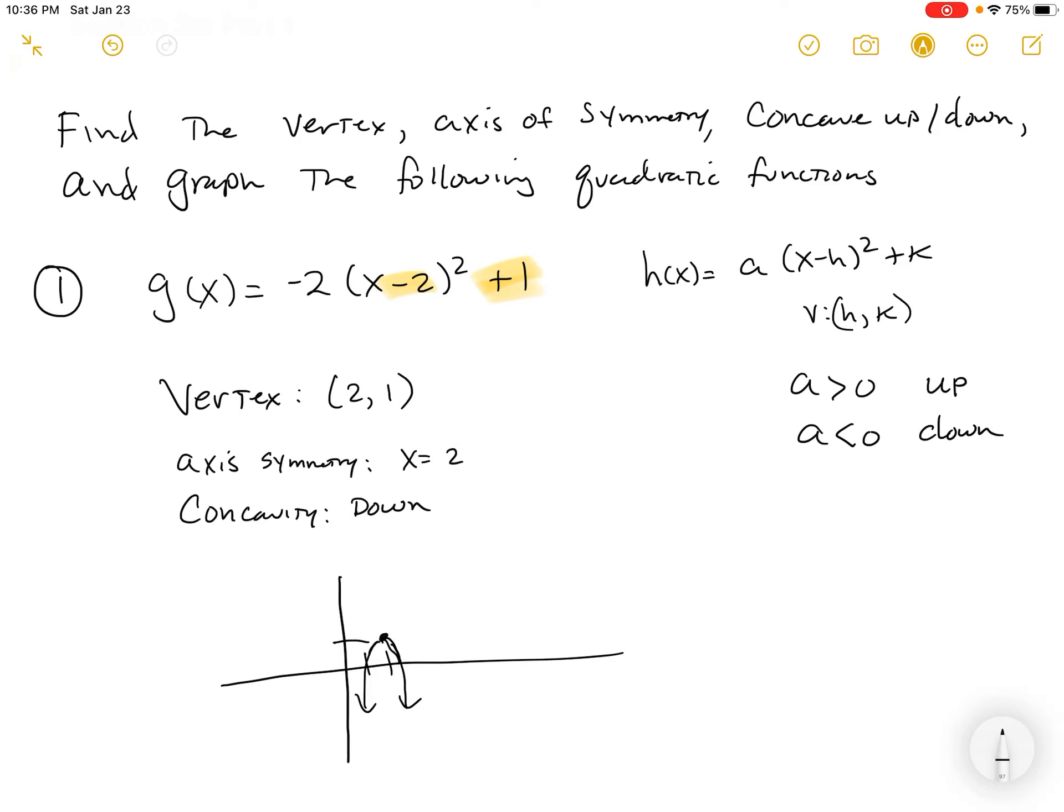Now, what's the axis of symmetry? I didn't really draw that other side as well as I could have. The axis of symmetry is this line right here. There's the axis of symmetry. It's the line that the parabola is reflective over.